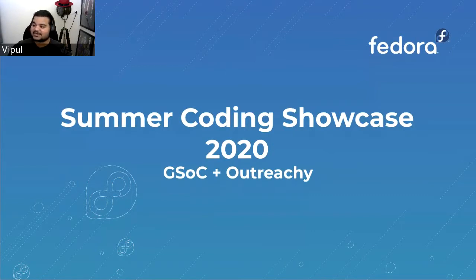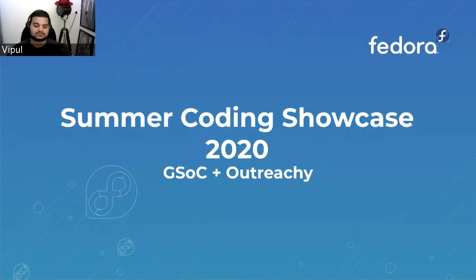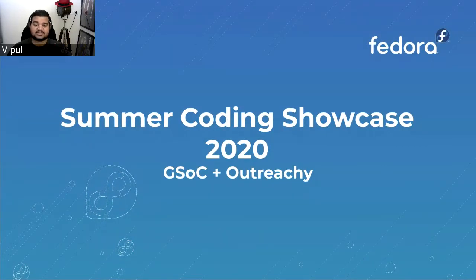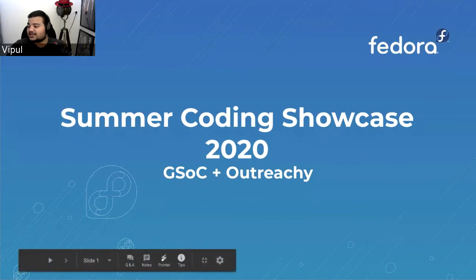The Fedora organizers have had internship programs where we try to work with different folks and get them into the community to work on a project, and it has always worked very well for us. This year we had GCI, Outreachy, and GSoC — Google Code In, Google Summer of Code, and Outreachy. GCI was the last year; Google has stopped that program. But for now we have Google Summer of Code and Outreachy.